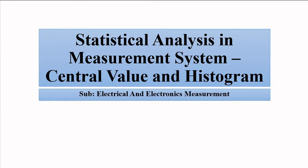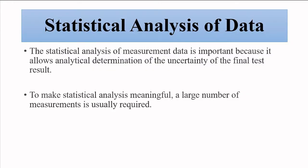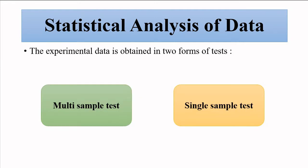Statistical analysis of data is done so that we can get close to the true value, because measurements are prone to error. A lot of factors play a role — the human factor, environmental factor, and the quality of the instrument all cause deviations from the true value. Generally, a lot of readings are taken for a particular parameter under measurement.